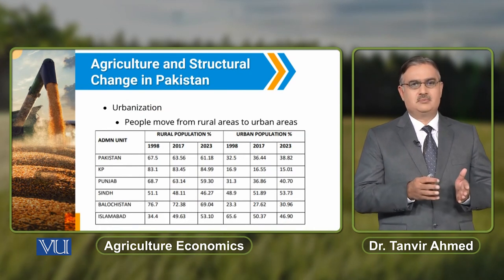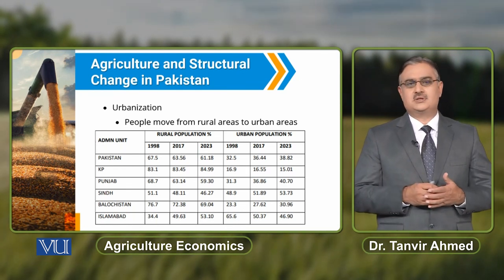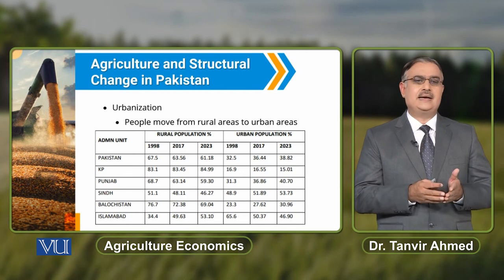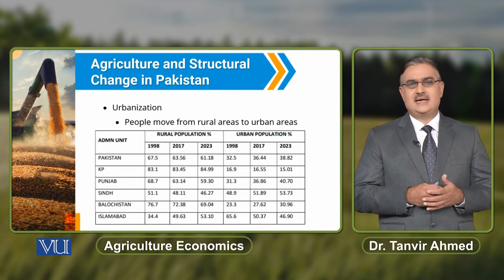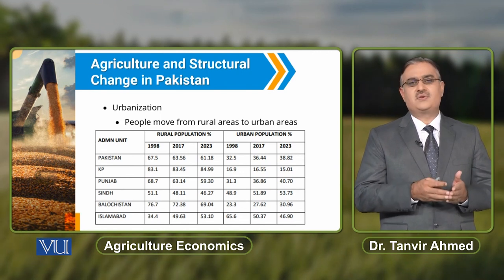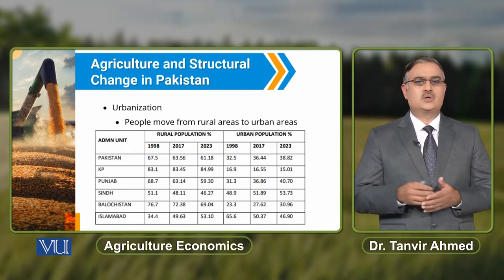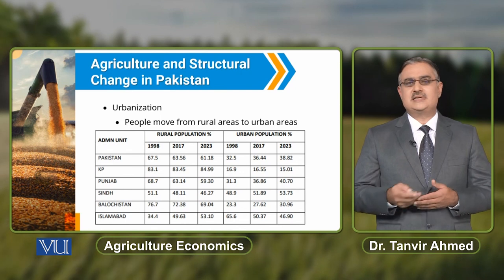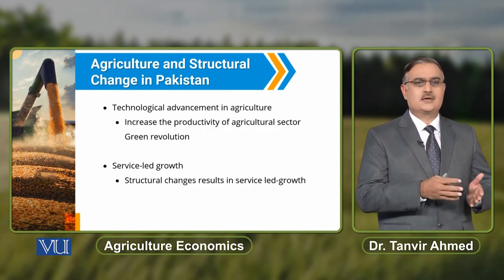Because of agriculture, whenever there is a structural change in the economy, we can observe more urbanization — people move from rural areas to urban areas. In this table, we can observe that Pakistan's urban population was approximately 32.5% in 1998, which rose to around 38.82% in 2023. Interestingly, Khyber Pakhtunkhwa shows a decrease in urbanization: 16.9% in 1998 dropping to 15.01% in 2023, while all other provinces show a consistent increase in urban population percentage. Urbanization is also a result of structural changes in the economy.